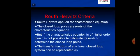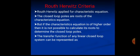Routh Hurwitz Criteria. Routh Hurwitz applied for characteristic equation. Characteristic equation means 1 plus G(s)H(s) equal to 0. The closed loop poles are roots of the characteristic equation.